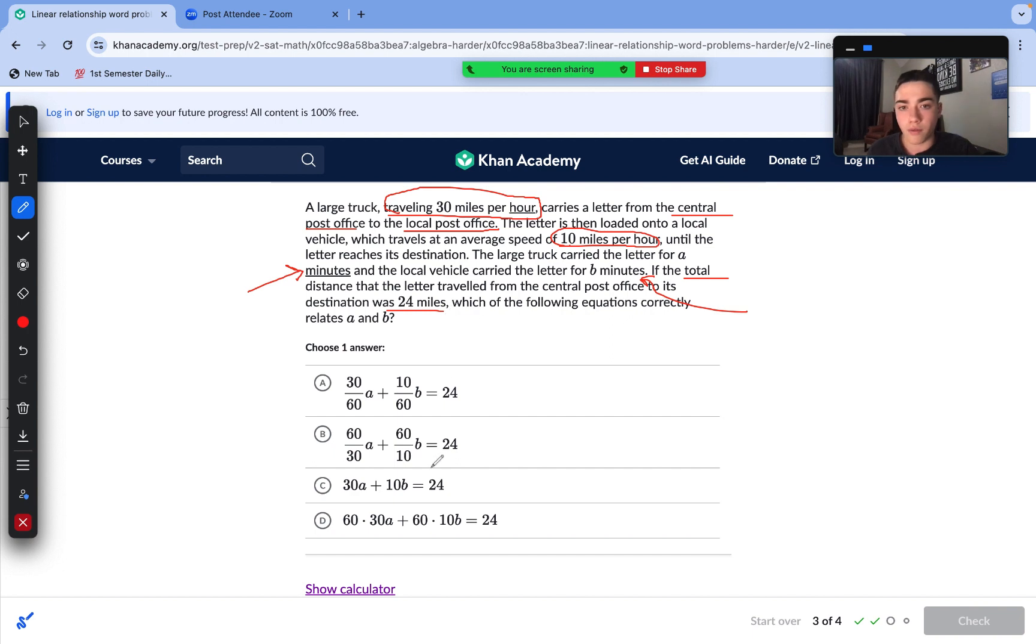So do not fall into the trap of answer choice C because we need to make this conversion from hours to minutes in order to find our correct answer. So C is automatically incorrect. Now, we can see that total 24, when we were dealing with these types of questions before, our total number was on our right side of our equation. That is how these standard form-like questions are going to go. So our all answer choices do indeed match this.